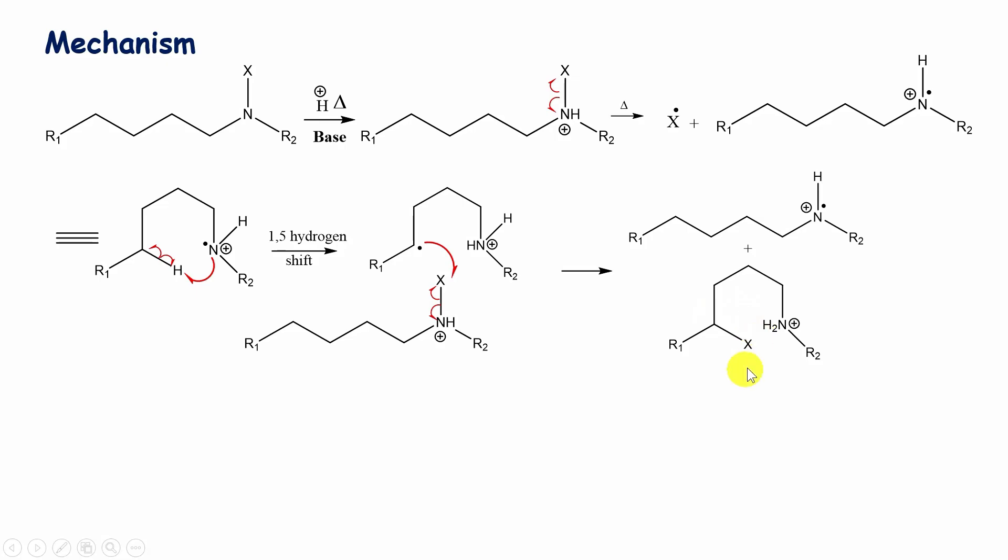This halogenated cation, in presence of base—base abstracts a proton from this positively charged ammonium ion, thereby forming this halogenated tertiary amine.